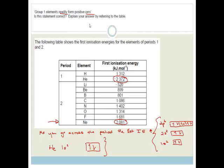Finally it says, group 1 elements readily form positive ions. Is this statement correct? Explain your answer by reference to the table. And yes, obviously it is, because if you look here, group 1, this is group 1, this is the first element in group 1, and that's your second element in group 1. It's period 2, but group 1. And you will see that they have got the lowest ionization energies for each of their periods, and therefore they're most likely to lose an electron and form positive ions.